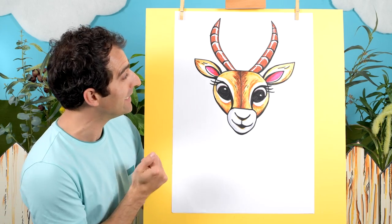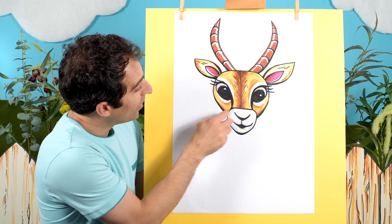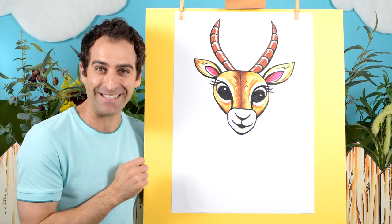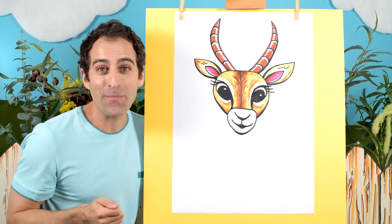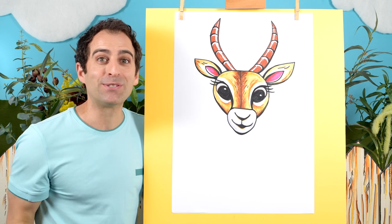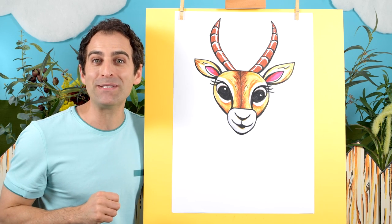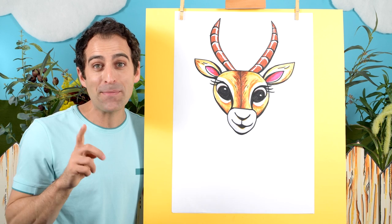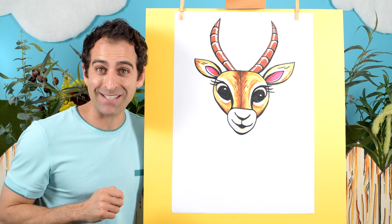And there we go, all colored in. I've used browns and golds and a little bit of pink in the ears. We've got a lot of letters to go in our alphabet to turn into animals. So remember to subscribe to the channel so you don't miss out on the next drawing lesson. Keep practicing, have fun, and I'll see you next time. Bye!